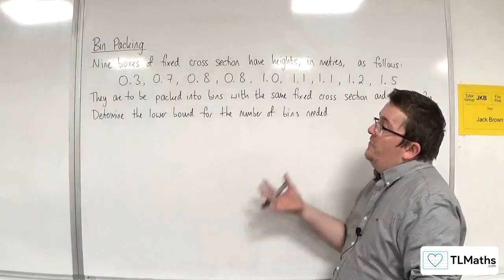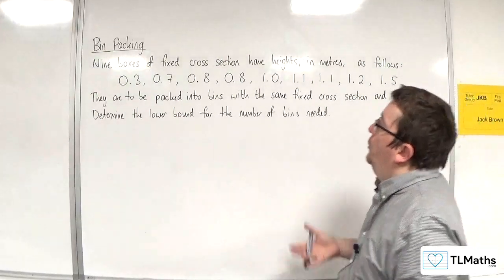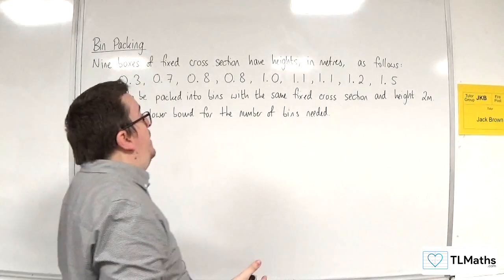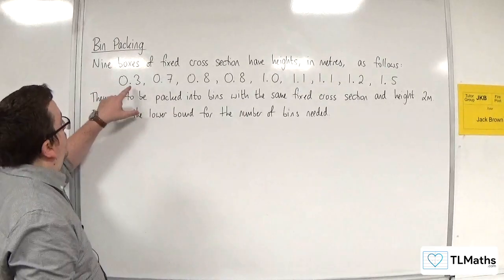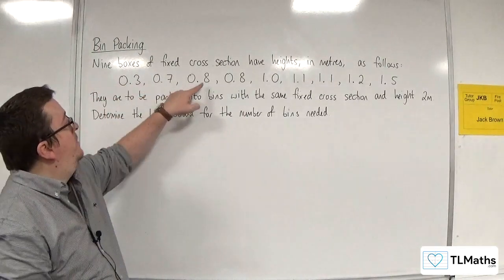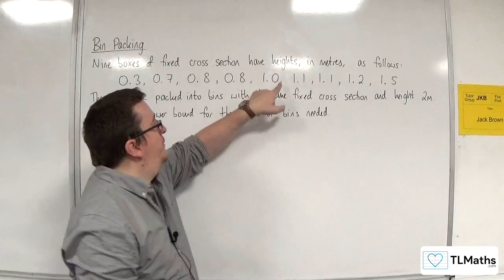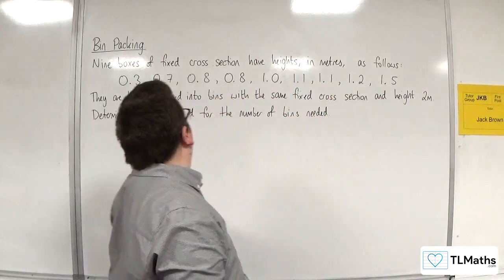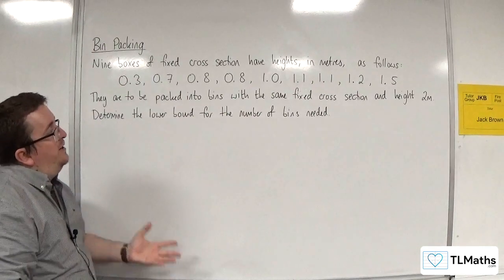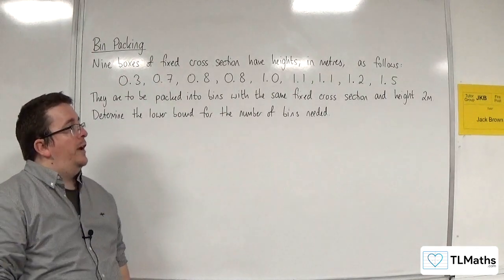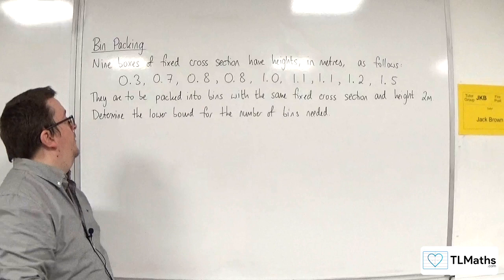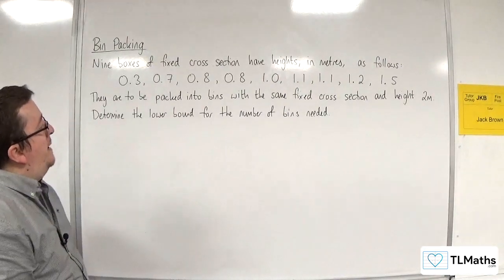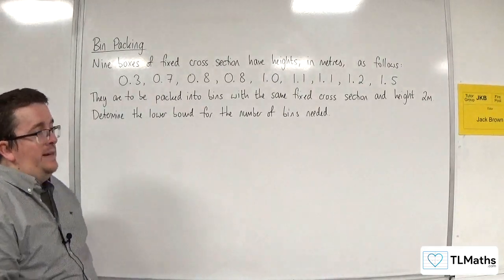So in this problem, we have nine boxes of fixed cross-section with heights in meters as follows: 0.3 meters, 0.7, 0.8, 0.8, 1.0, 1.1, 1.1, 1.2, 1.5. They are to be packed into bins with the same fixed cross-section and height 2 meters. Determine the lower bound for the number of bins needed.